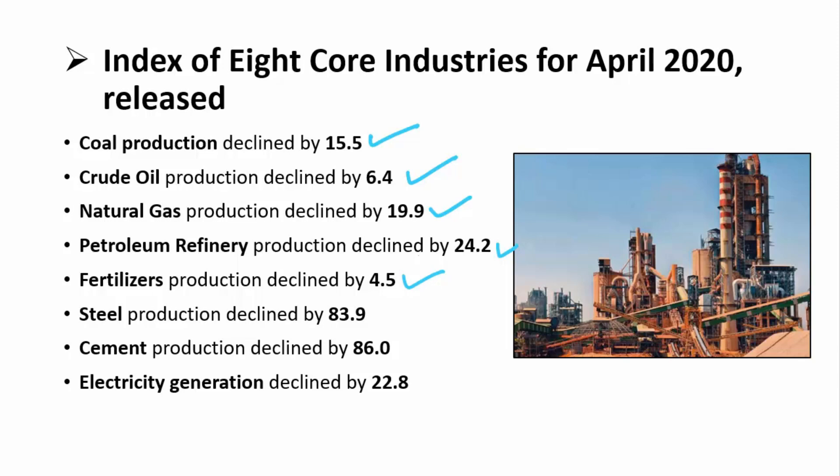Steel industry suffered heavily due to its reliance on transportation and a steep decline in demand from the construction sector. Cement production also declined by 86 percent, as construction activity was halted. Electricity generation declined by 22.8 percent, owing to the shutdown of many small-level and non-essential industries during the coronavirus lockdown.